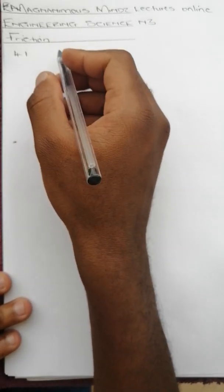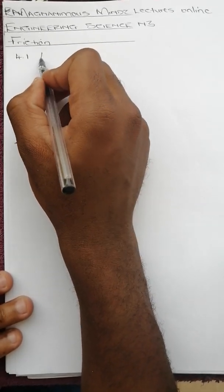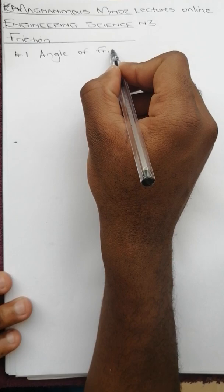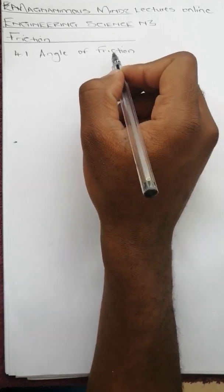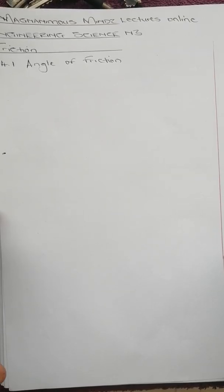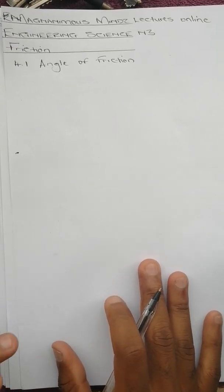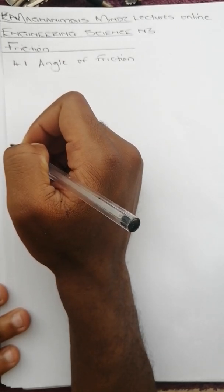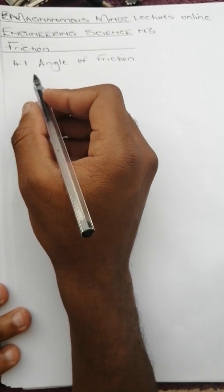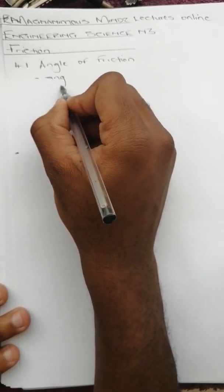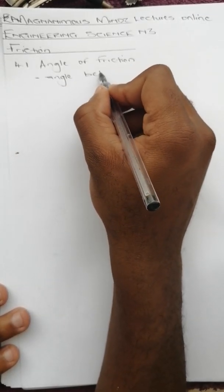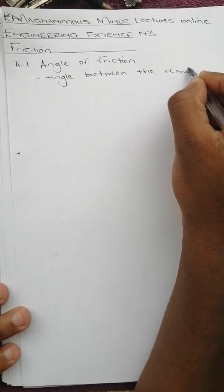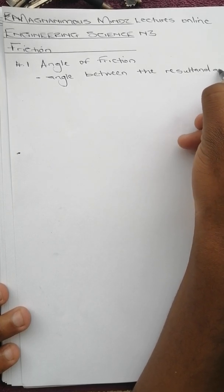Question 4.1 asks us to define the angle of friction. The angle of friction is defined as the angle between the resultant force and the normal reaction force, which can be represented by the normal reaction force and the maximum frictional force.